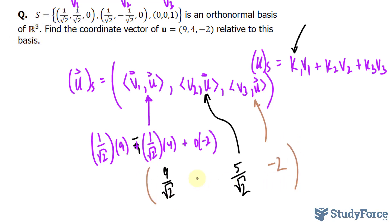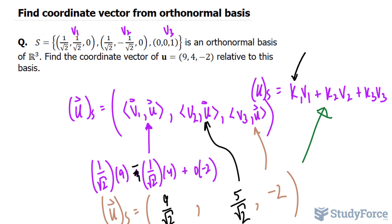So what you have right here is called the coordinate vector u relative to S. As a challenge, try to do it the old way and see how the answer there compares with this one. You're going to find out that it's the exact same. And there you have it. That is how to find the coordinate vector from an orthonormal basis.